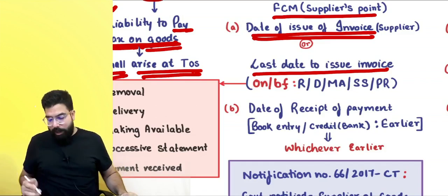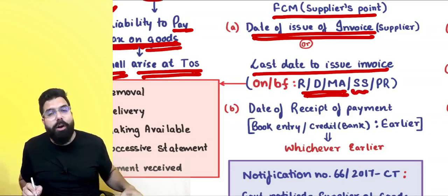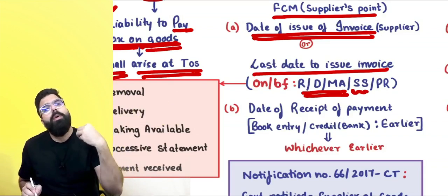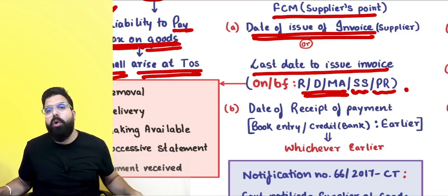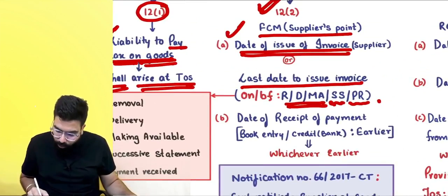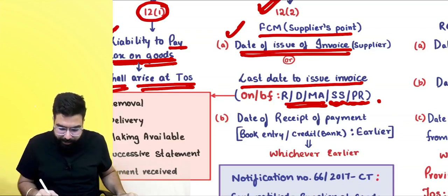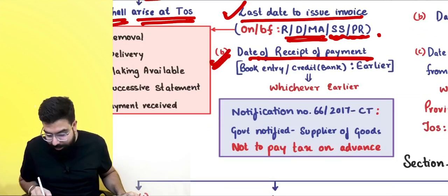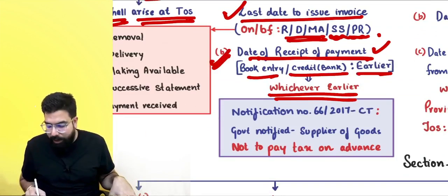On or before removal, delivery, or making it available, the invoice should be raised. In case of continuous supply of goods, it is on or before successive payments or successive statements are issued. The time of supply is: date of issue of invoice, or last date to issue invoice, or date of receipt of payment — whichever is earlier. Date of receipt of payment means book entry or credit in the bank account, whichever is earlier.